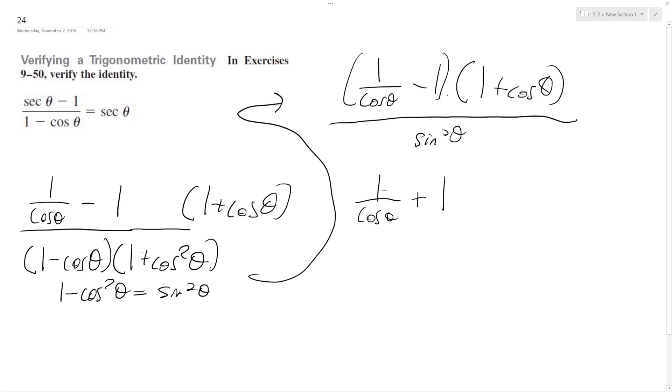Cosine times 1 over cosine minus 1 minus cosine theta all over sine squared theta. These cancel out.